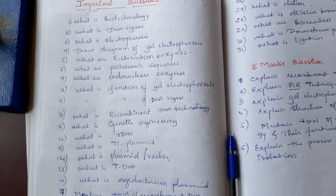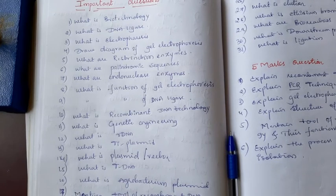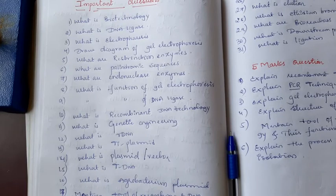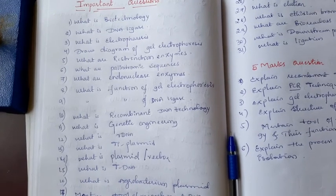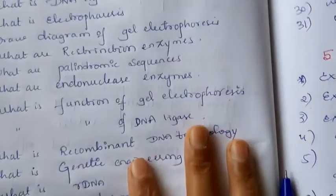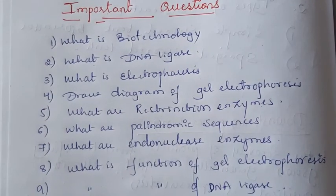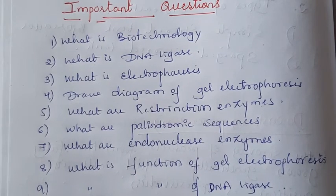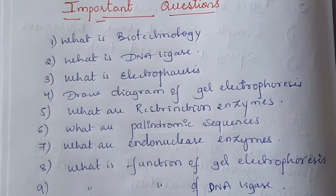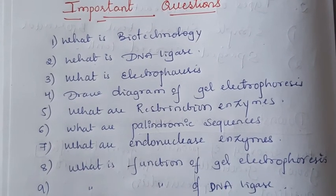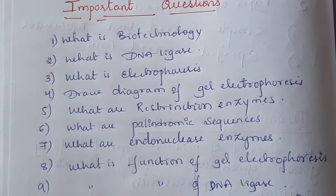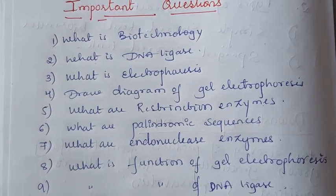First question for 1 mark or 2 marks: the definition of biotechnology. What is biotechnology? In the introduction class I explained about biotechnology. Biotechnology is a branch of science which helps the synthesis of products from living organisms or their components. The product must be helpful for industries and mankind.